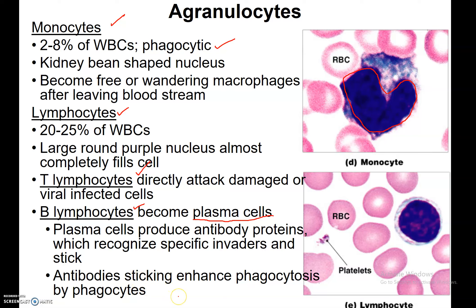B cells are also involved in immune memory. Once a group of B cells starts making antibodies, some of them remain in your system for a long period of time, allowing your body to remember that it's been exposed to a particular pathogen before. This causes a very quick immune response on re-exposure. A first infection might take 8 to 14 days to recover from, but after a second encounter with the same pathogen, you'll start getting better in about five or six days.